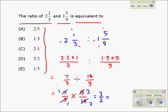Which can be written in the form of ratio as 3 is to 2. So the best option is option D, 3 is to 2. Thank you.